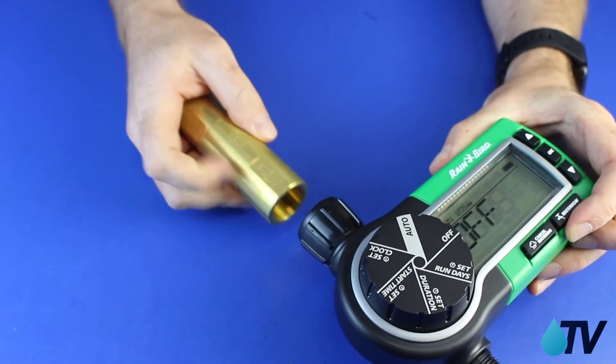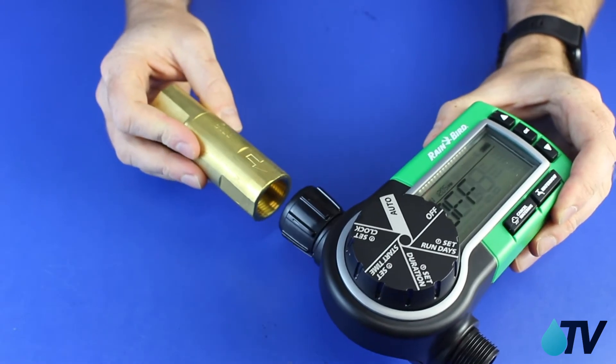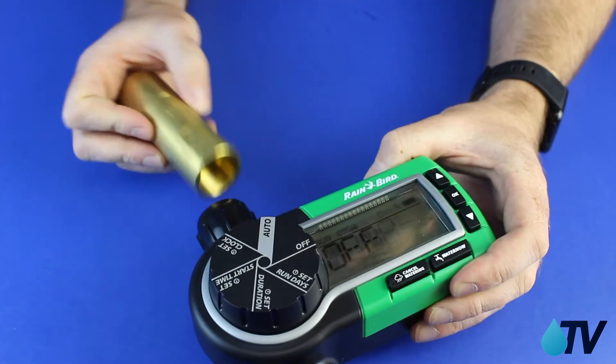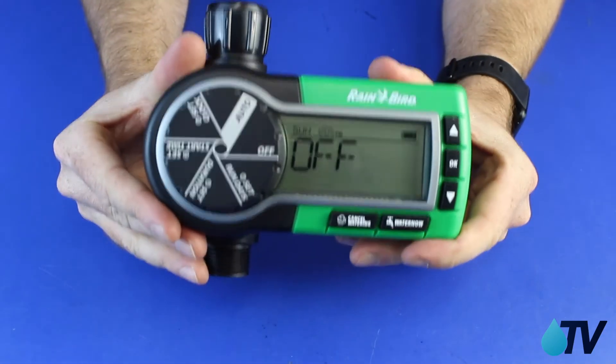The arrow shows the direction of flow and we get a little nipple in between and whenever you turn your tap on and off, your timer on and off, it'll be sitting there nice and comfortable and you'll have a nice working tap timer.